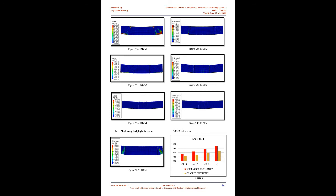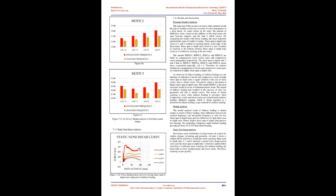An 8-node linear brick with reduced integration and hourglass control solid homogeneous element is used to model the beam. A 2-node linear displacement element is used to model rebars. A discrete rigid element is used to model bearing plates and loading plates. General contact is done for all exterior faces, feature edges, beam segments, and analytical rigid surfaces.